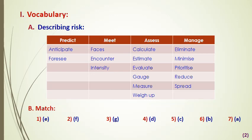Under assess, we can have calculate, estimate, evaluate, gauge, and we can also use weigh up. And of course the word measure. Manage is a different column — we can put under it words like eliminate, minimize, reduce, spread, and prioritize. These are the verbs that go with manage.